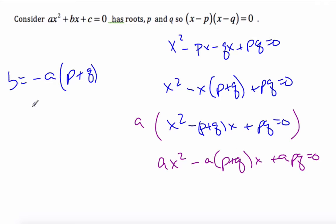Which tells me that p + q is equal to -b/a. Similarly, I can say that c is equal to apq. And so p times q is c/a.